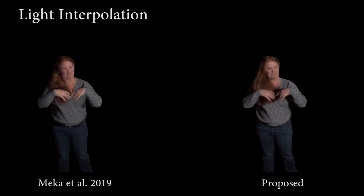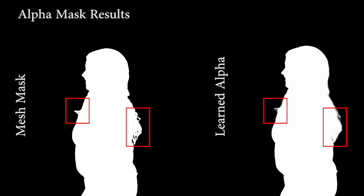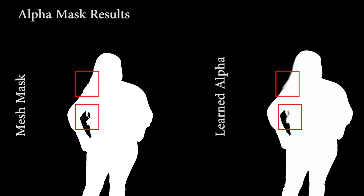As a by-product, our system produces an alpha mask that is key for realistic compositing. Note how our predicted mask is able to capture fine-grained details in contrast to the mesh silhouette.